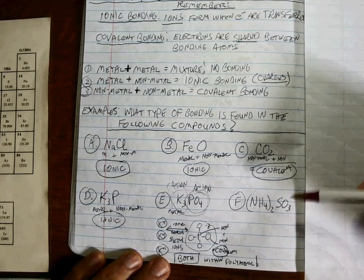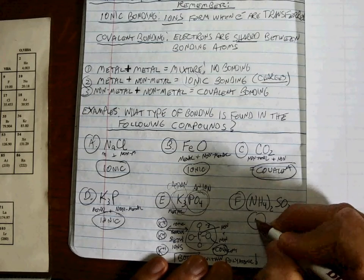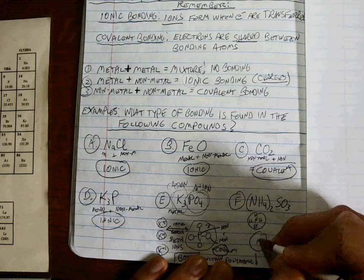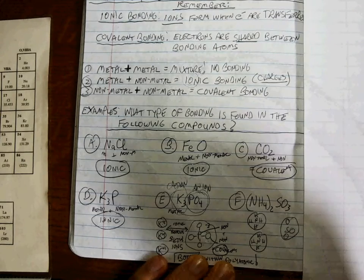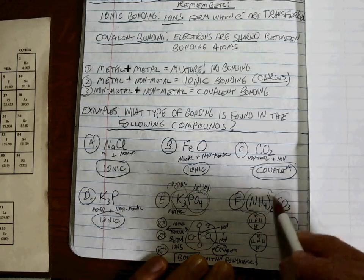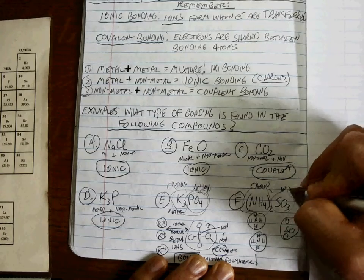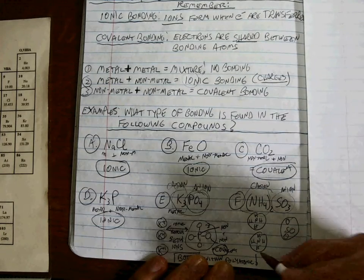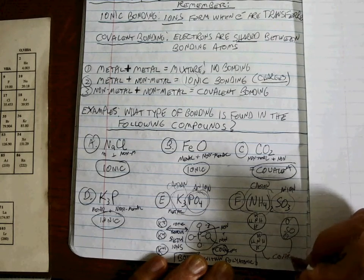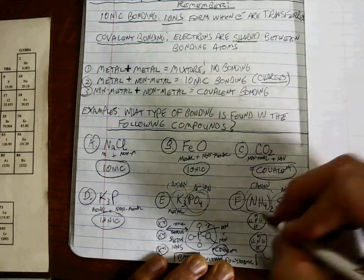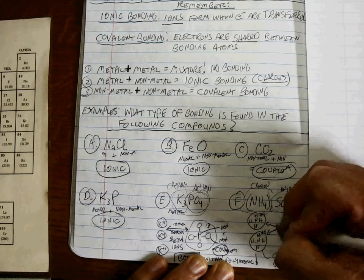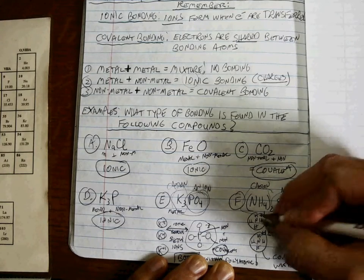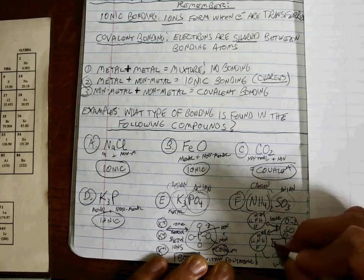When you see a compound like ammonium sulfite, I want you to visualize the structure. You have to remember that the ammonium is a polyatomic cation and the sulfite is a polyatomic anion. Within all of these polyatomic ions there's covalent bonding within. The sulfite is a minus two and the ammoniums are plus ones — that's ionic bonding between the charged ions, the cation and the anion. So once again, the answer is both.